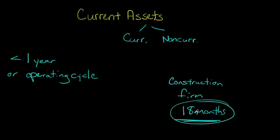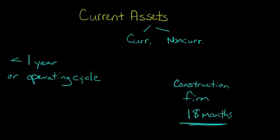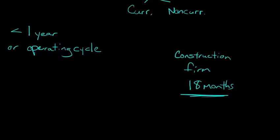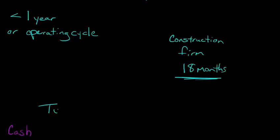Well, 18 months is longer than one year, so in that case, anything that the firm expects to turn into cash within that 18-month time frame, that would be a current asset. So let me give some examples, and it might be a little bit easier to understand once we walk through some types of current assets. So some types of current assets that you'll see on a balance sheet.